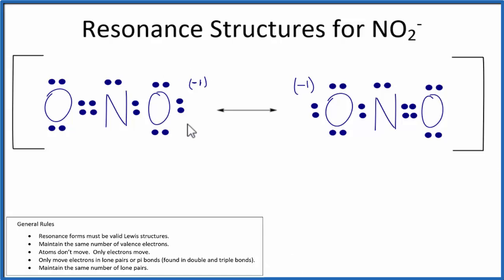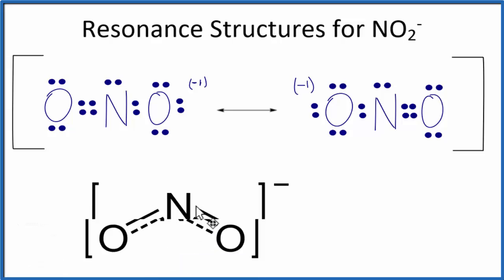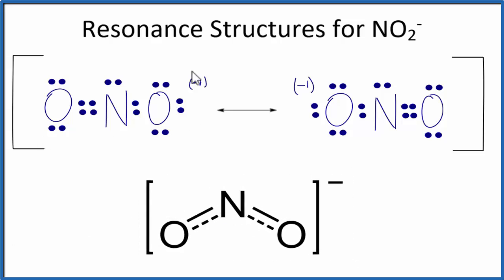Note that these two resonance structures aren't switching back and forth. We're really describing the same molecule. If we looked at that molecule in the lab and measured its bond lengths, it would look like an average of these two resonance structures.